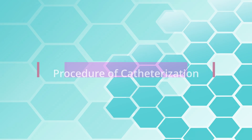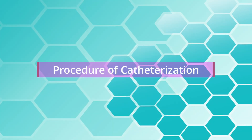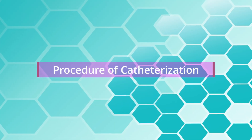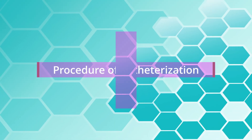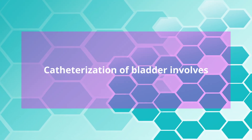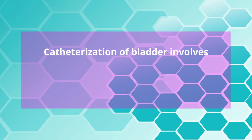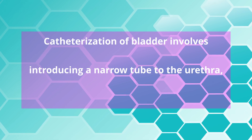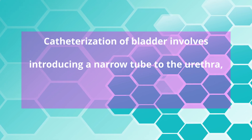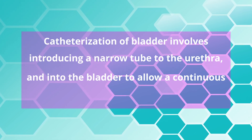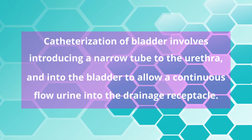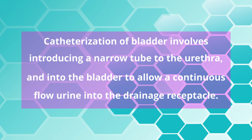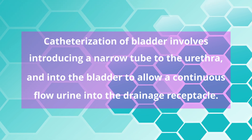In this video we will learn about the procedure of catheterization. Catheterization of the bladder involves introducing a narrow tube through the urethra and into the bladder to allow a continuous flow of urine into the drainage receptacle.